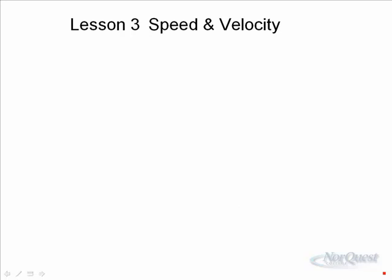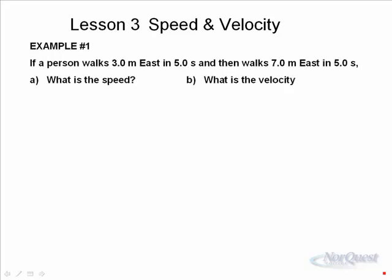Probably the best way to understand the difference between speed and velocity is to look at a couple of examples. So we'll look at three straightforward examples. Example number one, a person walks three meters east and then walks seven meters east. The first part of his motion takes five seconds. The second part takes five seconds. What's the speed? What's the velocity?